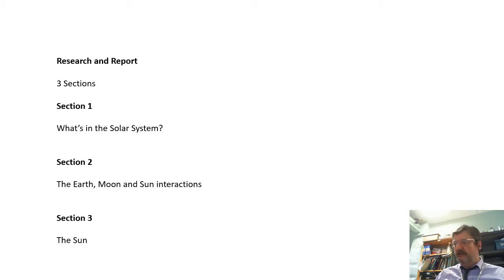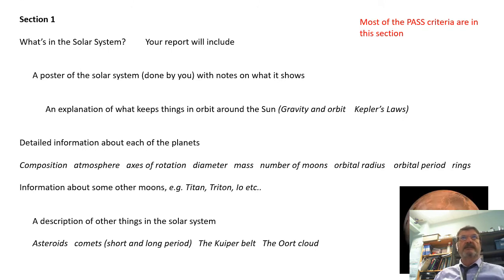There are three sections. The first section is about what's in the solar system, the different bits and pieces. The second section is about the Earth, the Moon, and the Sun and the interactions between them. And then the third section is just about the Sun.